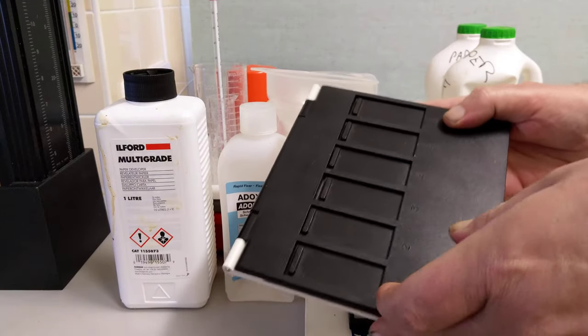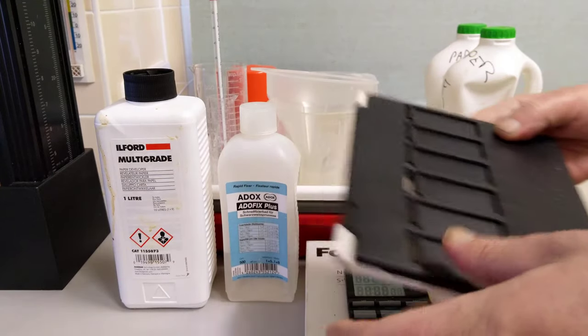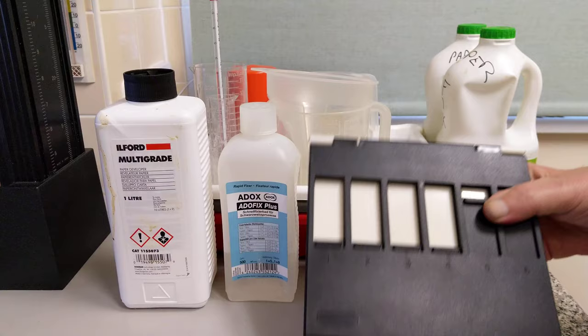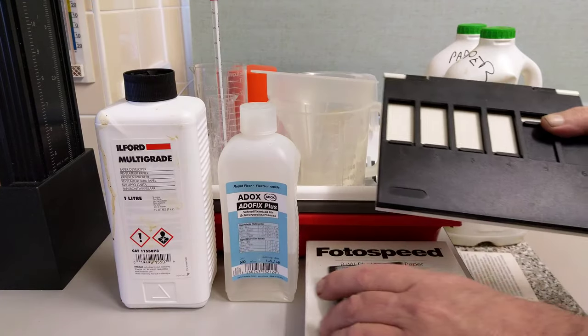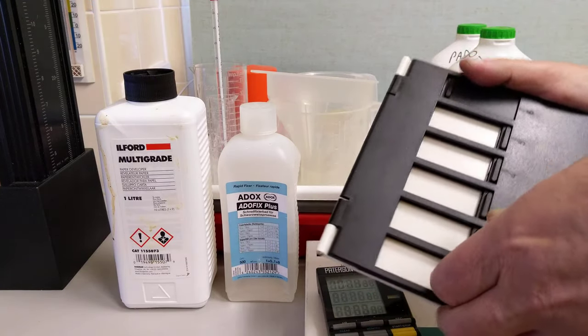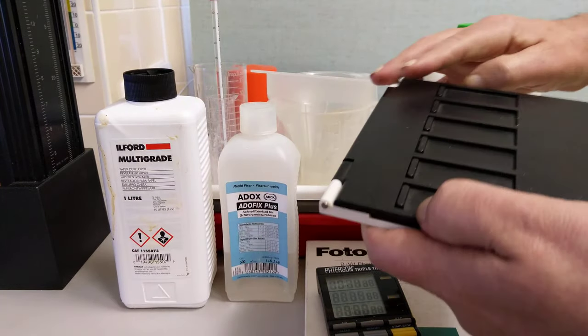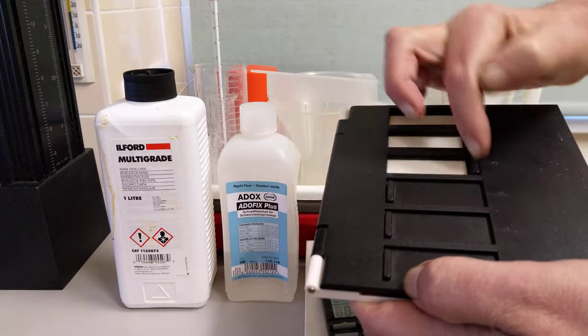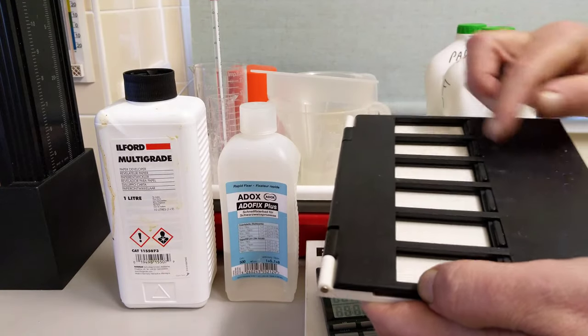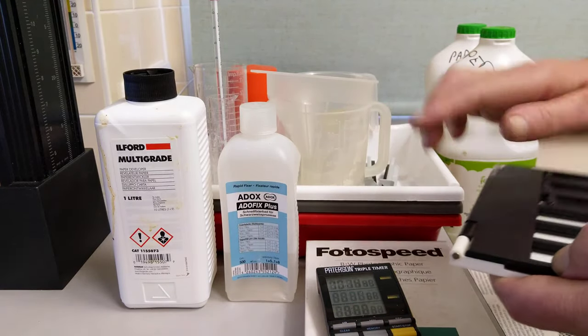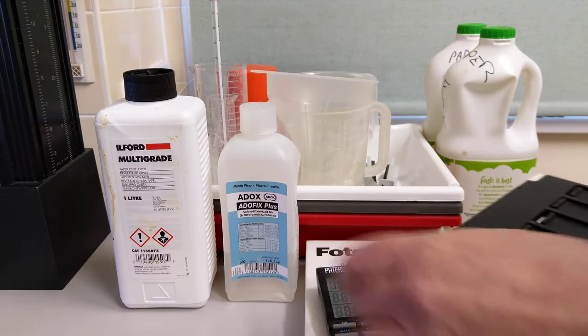And this is a handy little thing. This is a test strip printer. You can make a test strip by using a piece of cardboard over a piece of paper, but this is just a posh way of doing it, I suppose. You can put your paper in there and then you can expose in increments to work out what your exposure should be. So these are optional, nice to have, but you don't really need them.